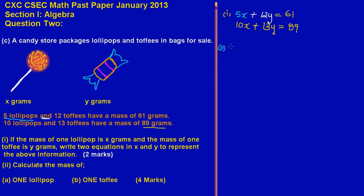For part two, I'm going to solve our equations. We have 5x + 12y = 61, which I'll label equation 1, and 10x + 13y = 89, which I'll label equation 2.